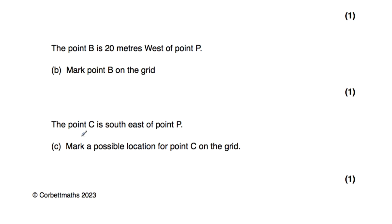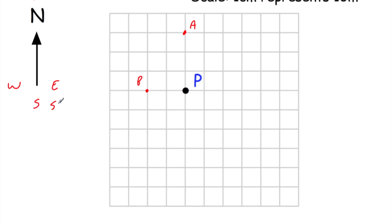The next part says point C is southeast of point P. Remember, we've got north, east, south, west, and then northeast, southeast, southwest, and northwest. Because it's southeast of P, southeast will be down to the bottom right — going down diagonally that way. We need to mark a possible location for point C. Going southeast from P, we could mark any point in that diagonal direction. So we mark something like that and label it C — that's a possible location of point C because it's southeast of P.